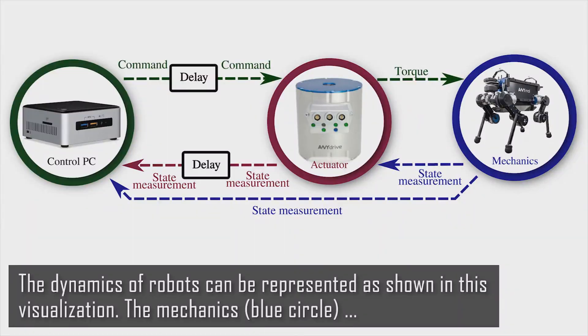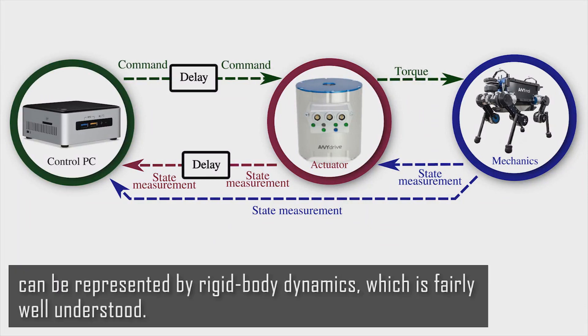The dynamics of robots can be represented as shown in this visualization. The mechanics, blue circle, can be represented by rigid body dynamics, which is fairly well understood.